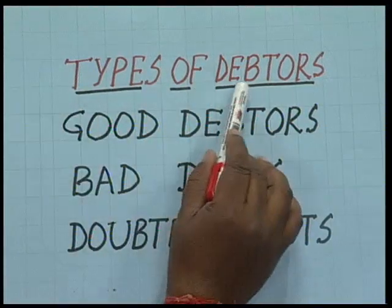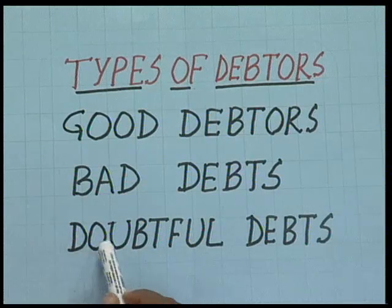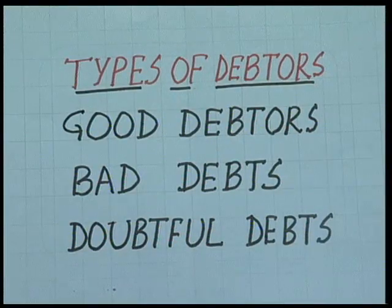Before we proceed, it should be noted that debtors are of three types. The first are good debtors — those from whom we are certain we will recover the amount, so no provision is needed. The second are bad debts, which occur when a debtor makes no payment at all; this is a loss fully debited to the profit and loss account. The third are doubtful debts — as the term indicates, they are in doubt; they may pay or they may not pay.